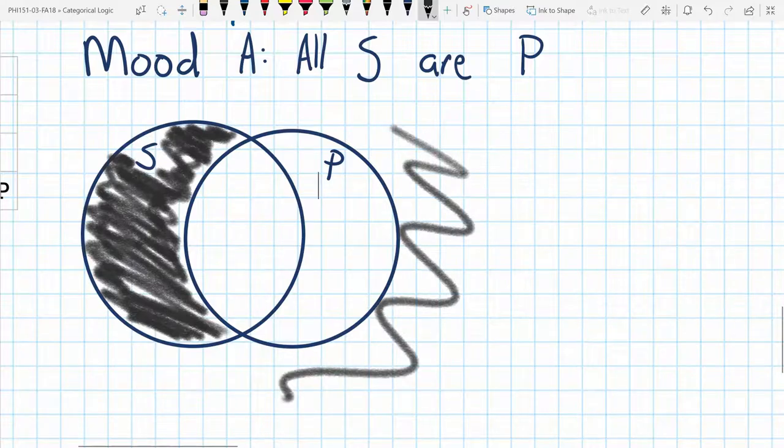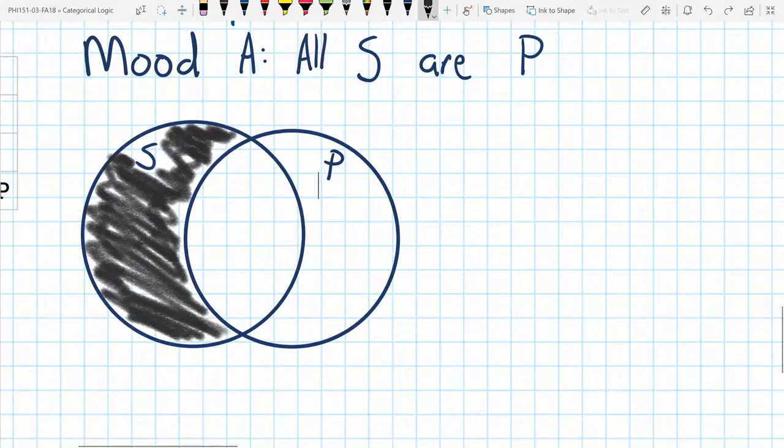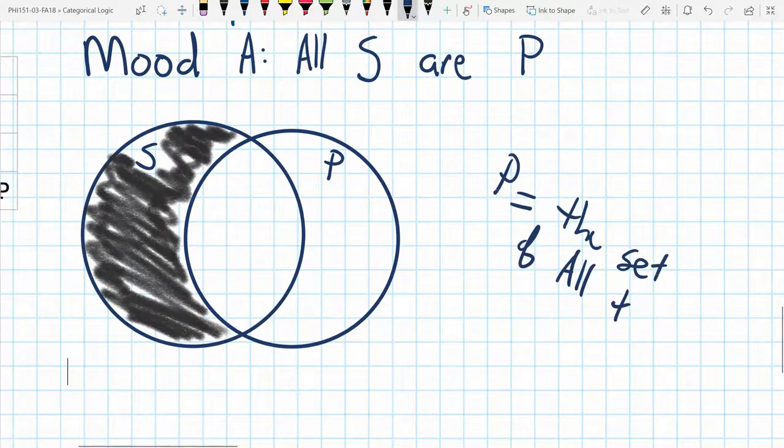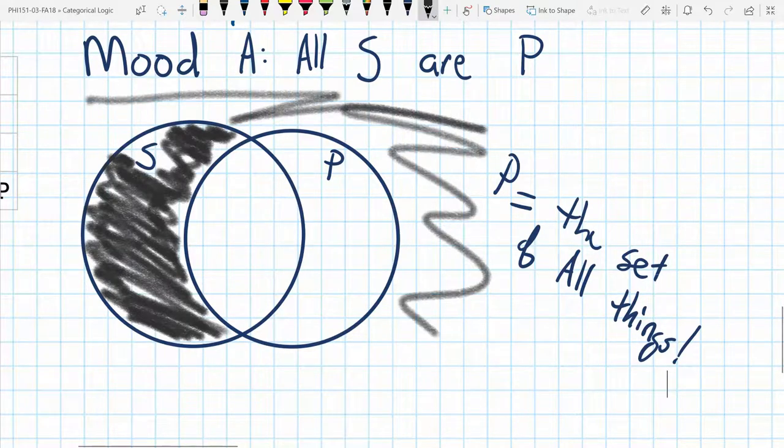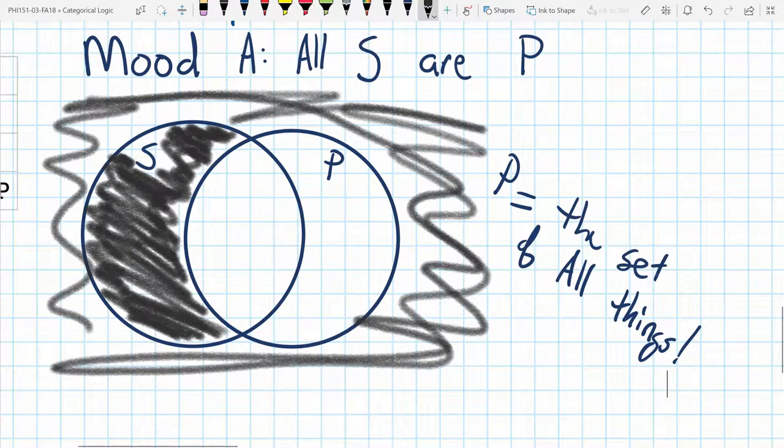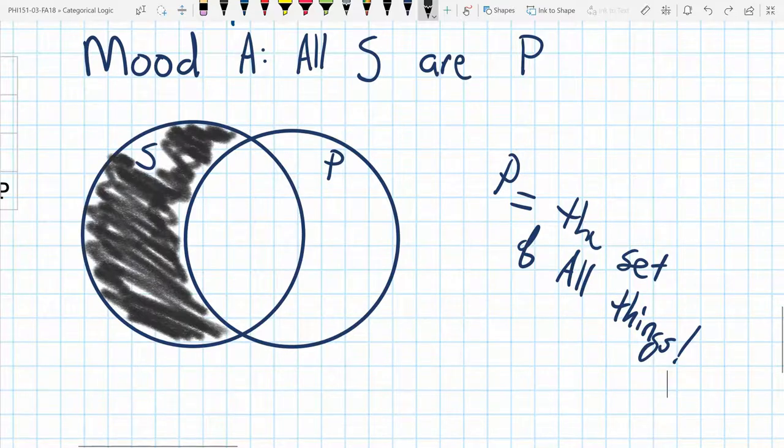And we don't even know if there's nothing that is outside of P. So we can't say anything there. So we're going to go ahead and leave that. We're also not going to shade this in because maybe, it might be the case that maybe P is equal to the set of all things, in which case, if it was, then we would definitely shade this in. But that's the only time we necessarily would. So, but this is how we would go about shading in the mood A.